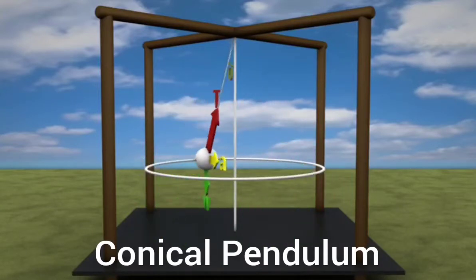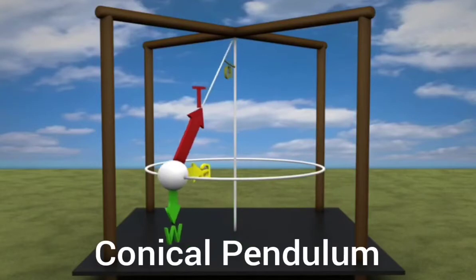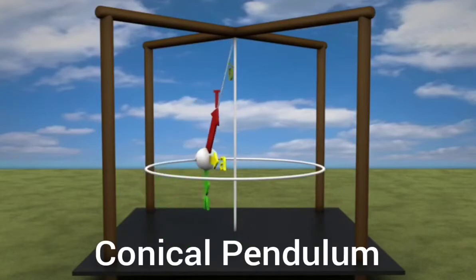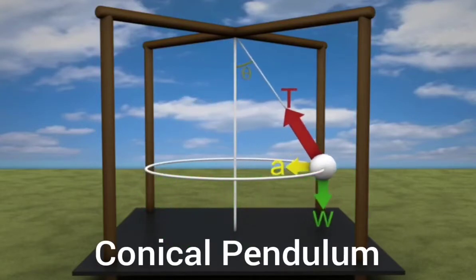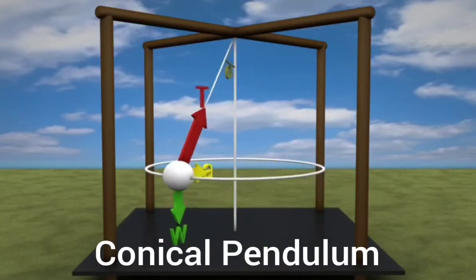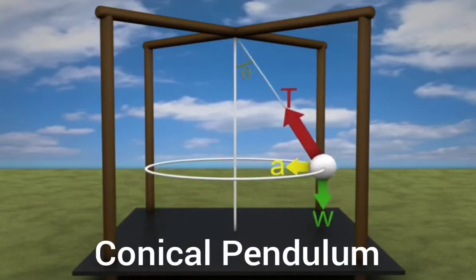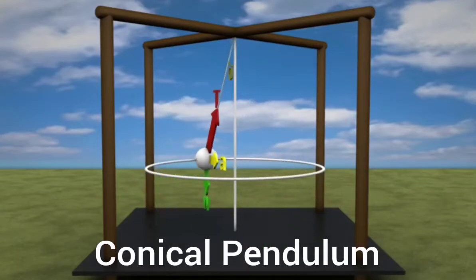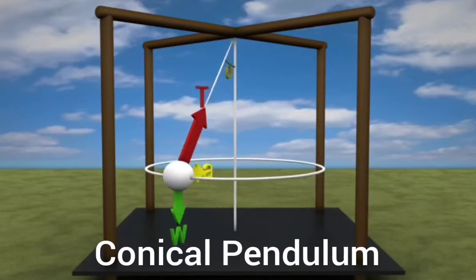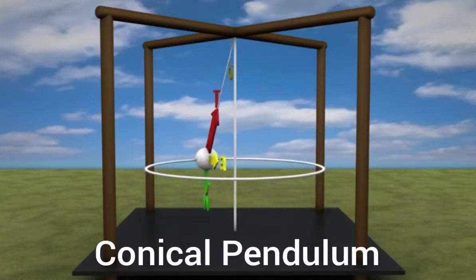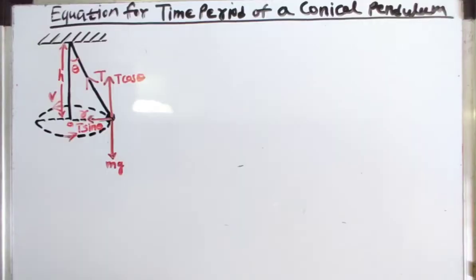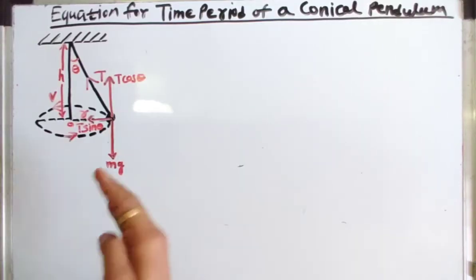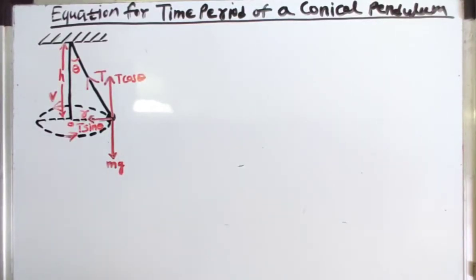The number of forces acting on the bob are its weight W acting vertically downwards and tension T along the string. Now we will derive the equation for the time period of a conical pendulum.